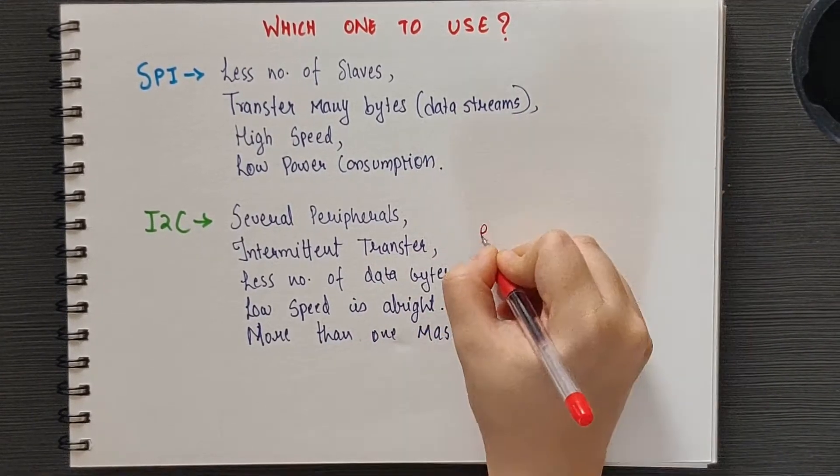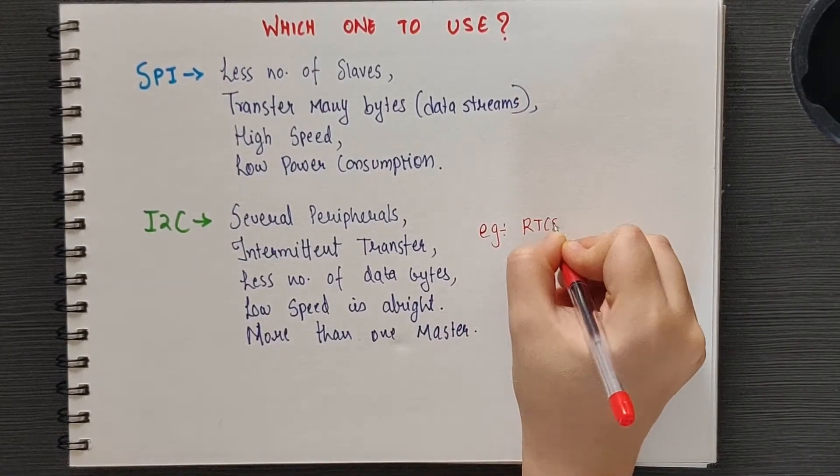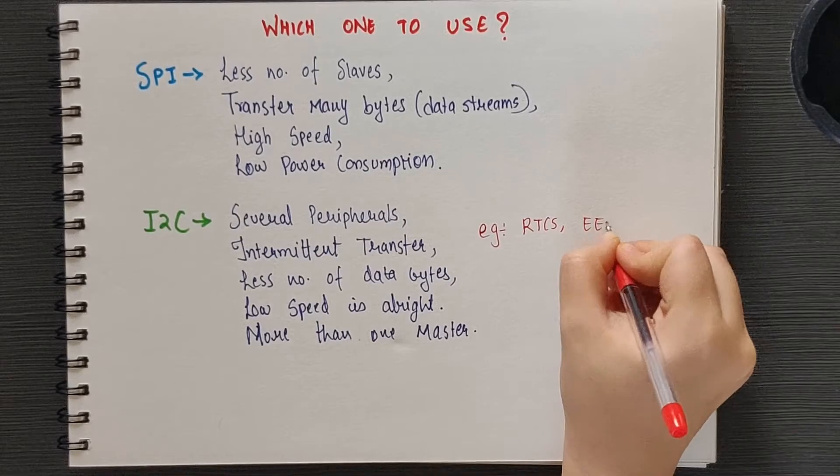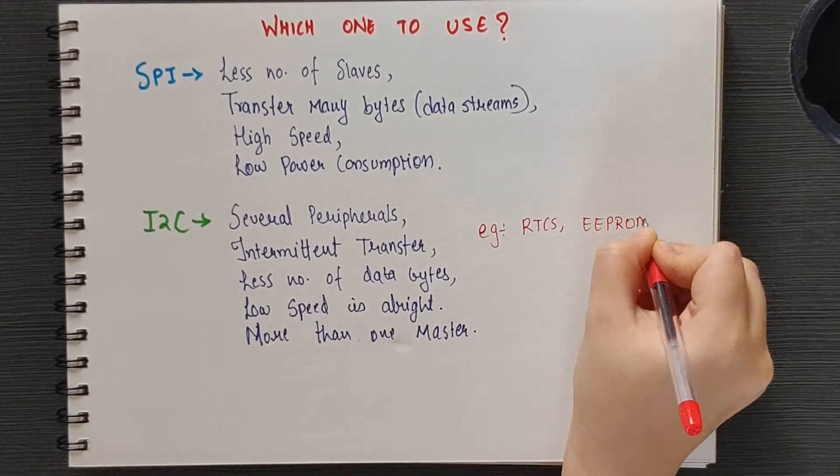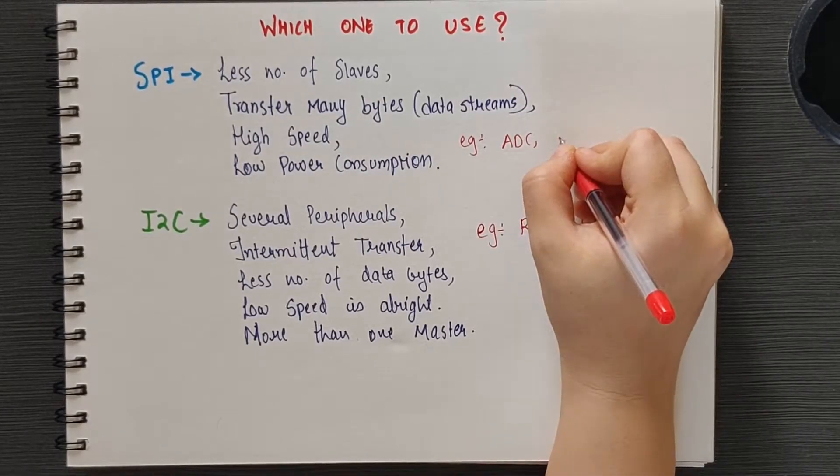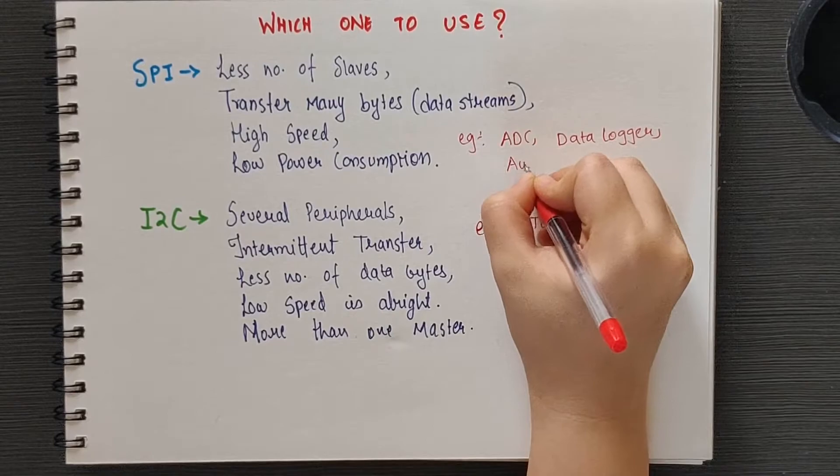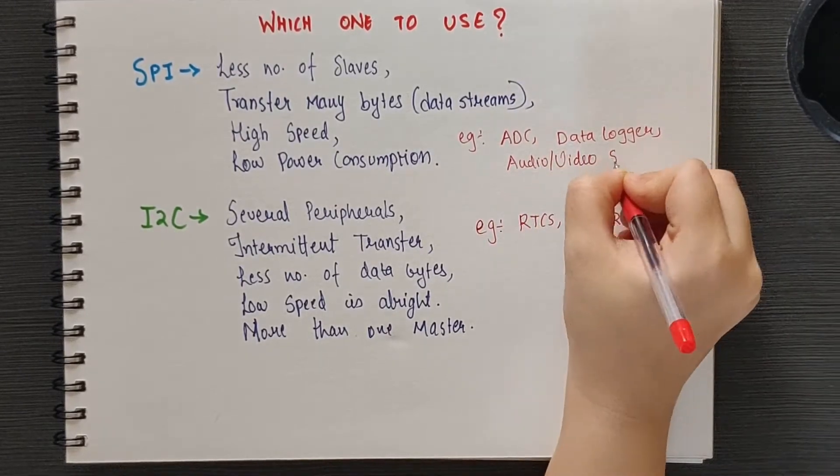Where is I2C usually used? It is used in RTCs in combination with the controller and with EEPROMs. SPI is used for devices that provide data streams, for example with ADC or with data logger wherein you have to do continuous data logging for audio video signals or software flashing devices.